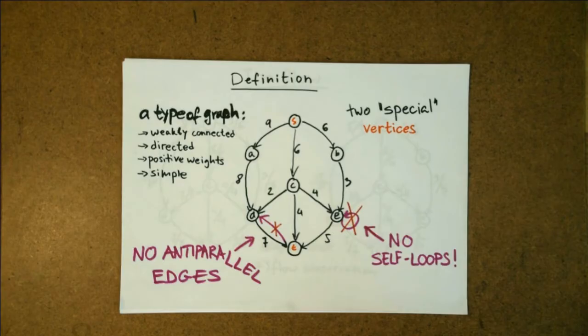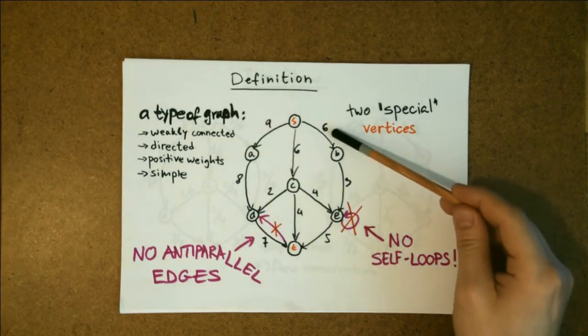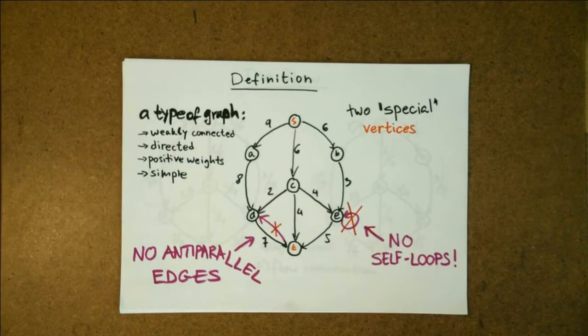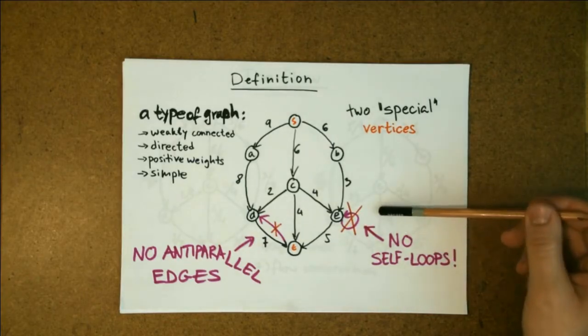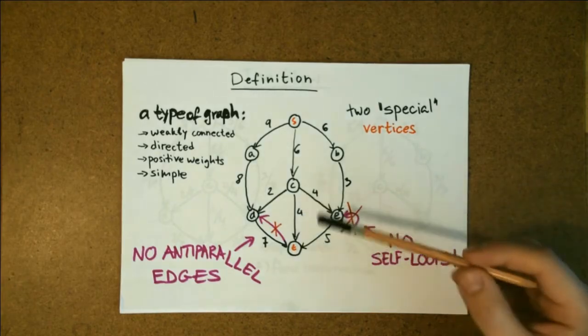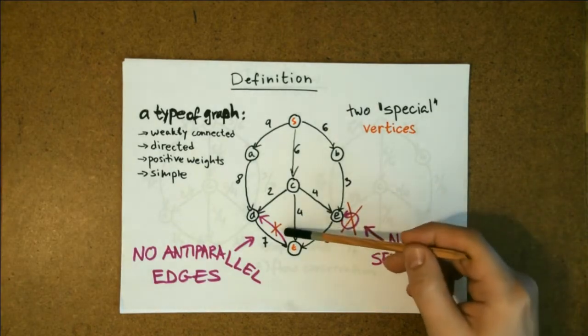Weights on the edges must be positive. These we refer to as capacities. Flow networks also must be simple graphs which means there are no self loops allowed. Also in the original flow networks there are no antiparallel edges.